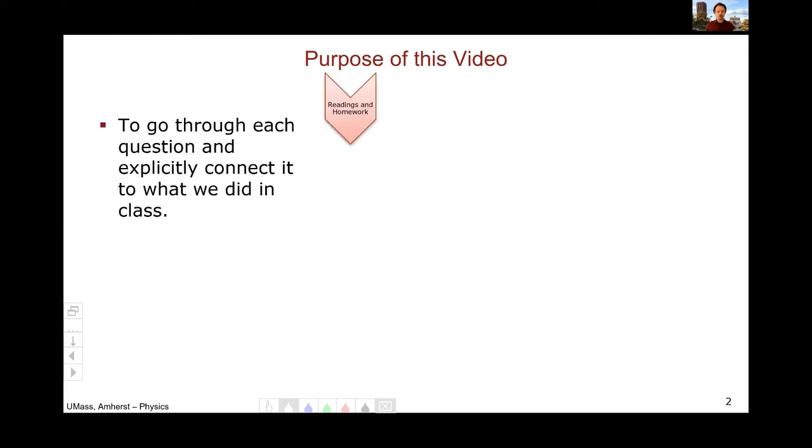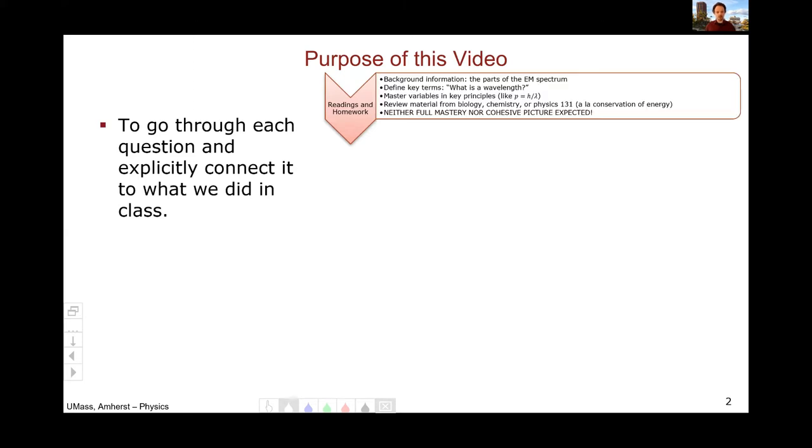So just as a recap, the units begin with readings and homework and these are meant to help you develop a base level of understanding. Full mastery is not expected nor is that you've developed a full complete picture. Your goal is learning background information like the parts of the electromagnetic spectrum, defining key terms such as wavelength, mastering variables in fundamental principles like p equals h over lambda, and then reviewing material from biology or chemistry or physics 131 like conservation of energy.